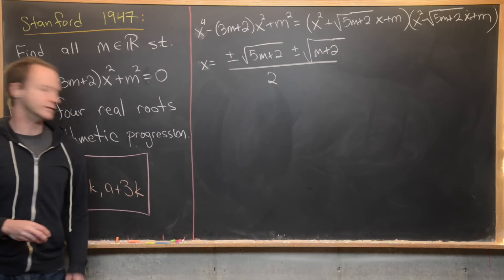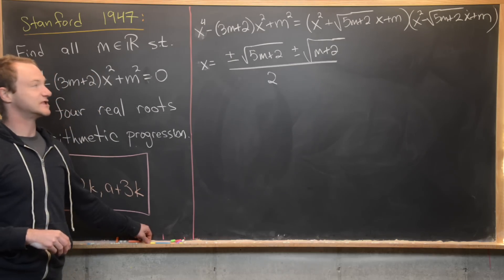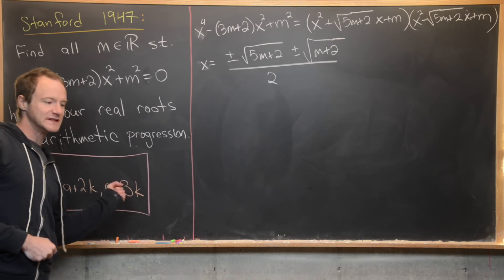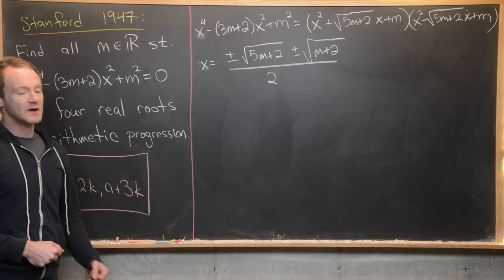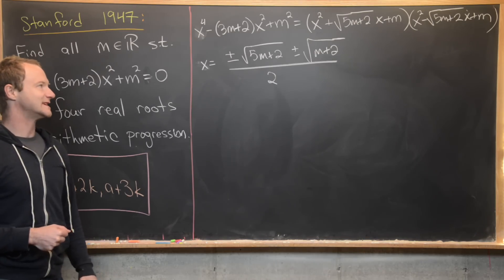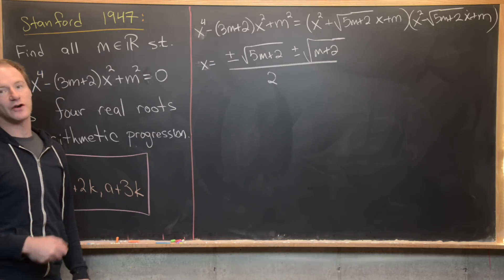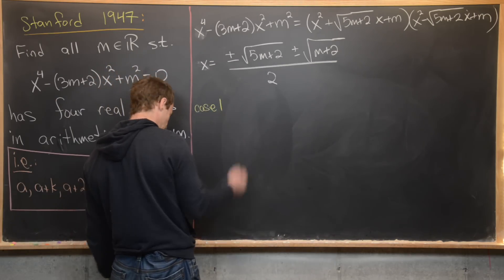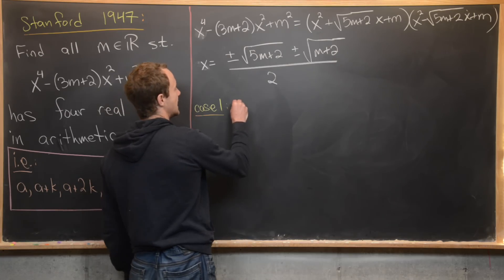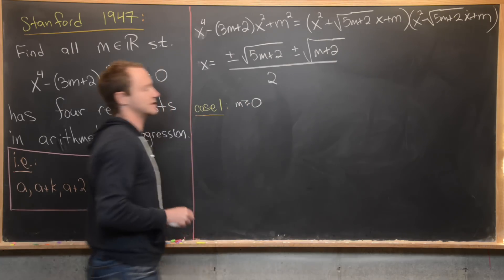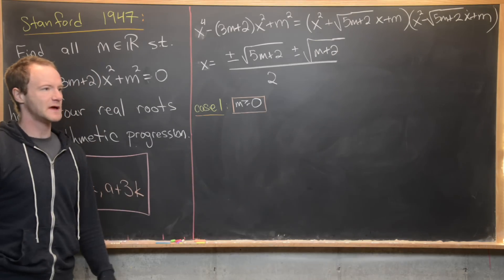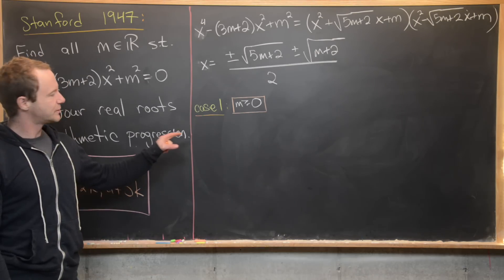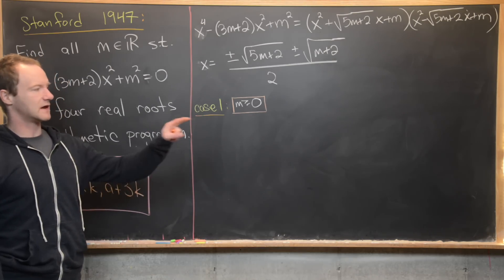We need to order these four roots from least to greatest, but their order depends on m. So we break into cases. Case 1 is m ≥ 0, which gives the most natural ordering.